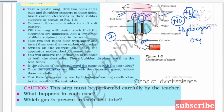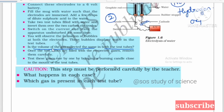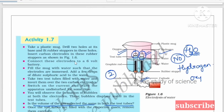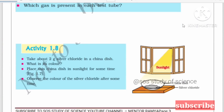To test these gases one by one, bring a burning candle close to the mouth of the test tube. For hydrogen, you will hear a pop sound, because the presence of hydrogen is always indicated by a pop sound. The presence of oxygen is indicated by the fact that the flame burns more brightly — the flame becomes brighter. That is how you indicate the presence of oxygen.